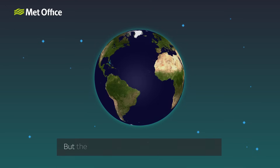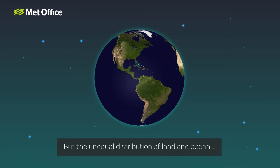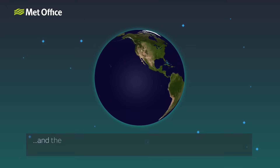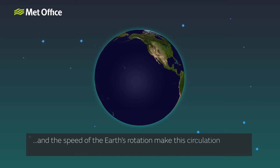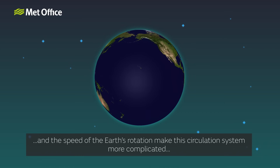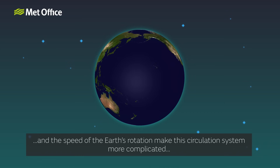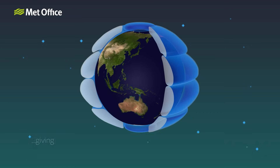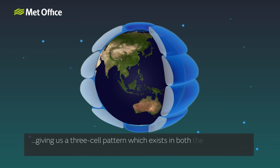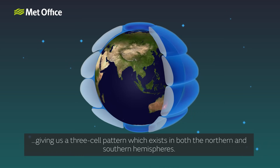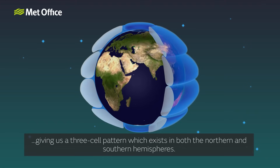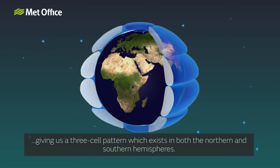But the unequal distribution of land and ocean, and the speed of the Earth's rotation, make this circulation system more complicated, giving us a three-cell pattern which exists in both the northern and southern hemispheres.